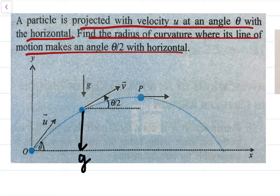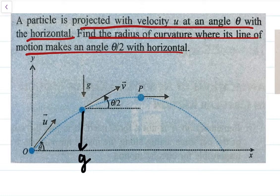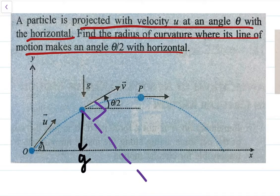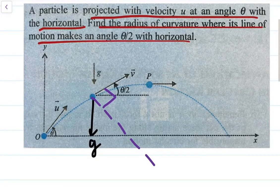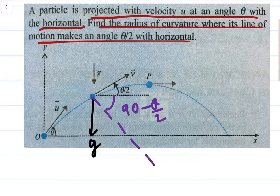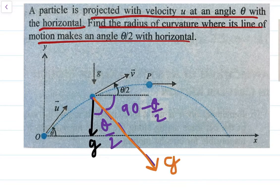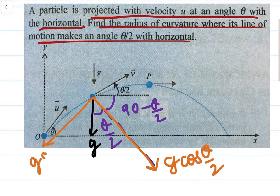We need the radius of curvature, so firstly we will break up the components of the acceleration — that is G here. This is G and the perpendicular component to the velocity will be 90 degrees, because it is the perpendicular component of G. So by geometry, this angle will be 90 minus theta by two, and this angle will be theta by two. So this perpendicular component comes out to be G cos(θ/2).